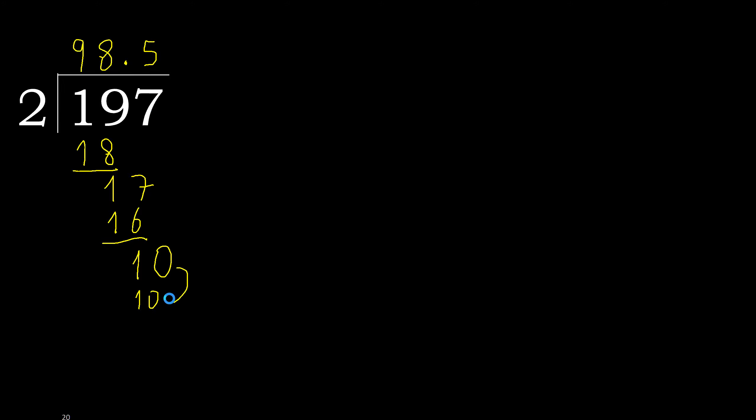10 is not greater. 10 minus 10 is 0. Therefore finish: 197 divided by 2 is 98.5.